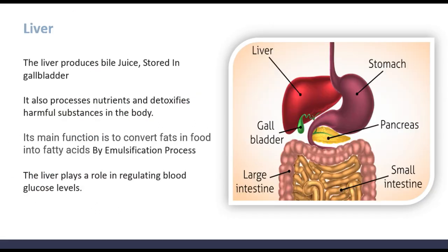The liver produces bile juice, which is stored in the gallbladder. It also processes nutrients and detoxifies harmful substances in the body. Its main function is to convert fats in food into fatty acids by the emulsification process. The liver also plays a role in regulating blood glucose levels.